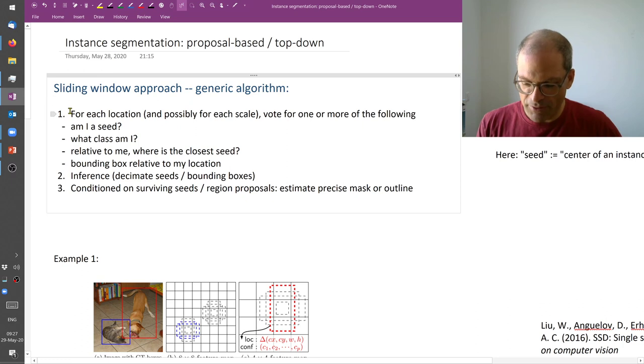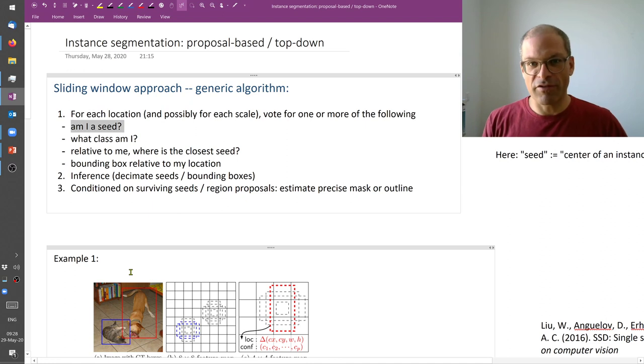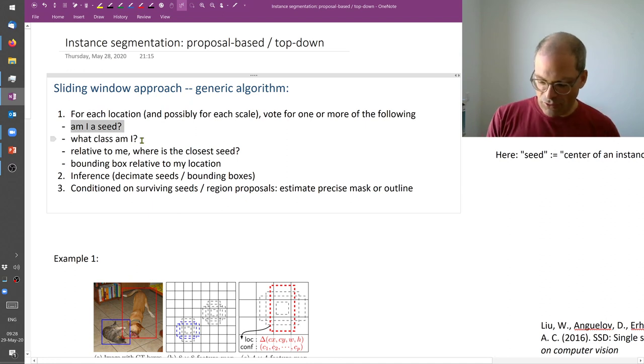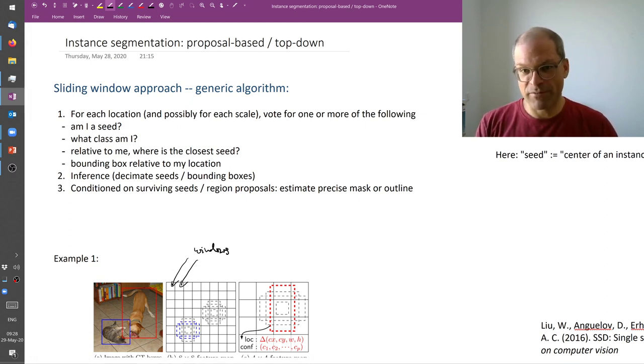We start by asking for each location one or more of the following questions. Am I a seed, and by seed I mean am I the center of an instance? We turn this into a classification problem. We train a neural network to answer for each of these windows the question: do I think I am the center of an instance or not?